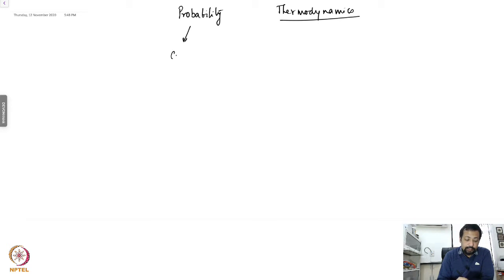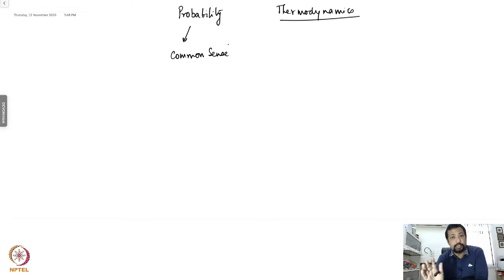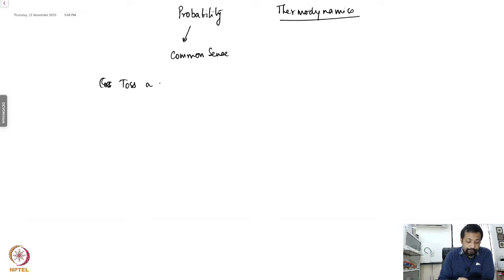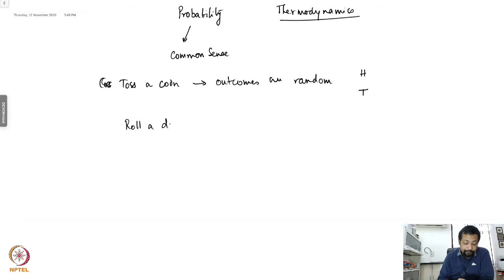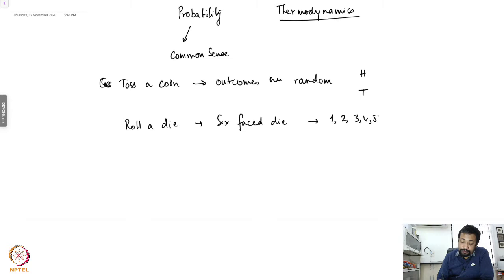Probability is nothing but common sense. We encounter this in plenty of occasions in our daily life. For example, if you toss a coin, then you know that the outcomes are random, so there is a certain probability of getting a head or getting a tail. Similarly, if you roll a die — let's say it's a six-faced die — then the number that comes up is also random. The possible outcomes are 1, 2, 3, 4, 5, and 6.